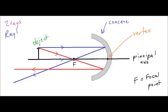So to summarize: ray one goes parallel to the principal axis and reflects through the focal point. Ray two goes through the focal point and reflects parallel to the principal axis. The point where these reflected rays meet is where the image is formed, shown here with a downward-pointing arrow because the base of the image lies on the principal axis.